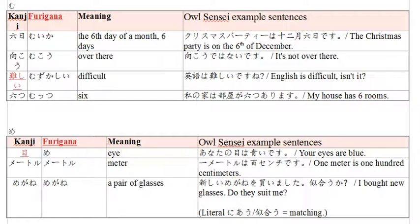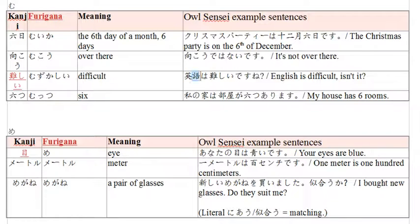The next word I made an example sentence for is muzukashii - muzukashii is the word for difficult. So: eigo wa muzukashii desu ne. English is difficult, isn't it? So eigo - that's the language go - eigo is English. Eigo wa means English is, muzukashii desu means it's difficult, and ne for isn't it? English is difficult, isn't it?